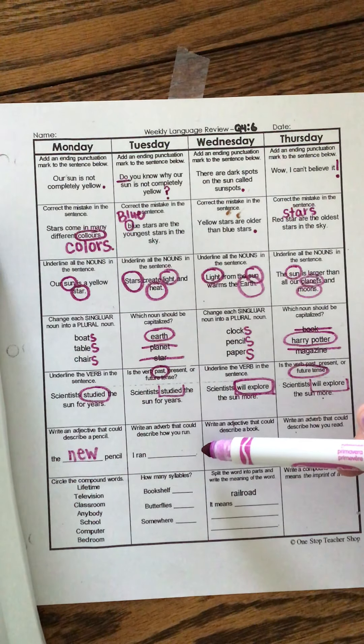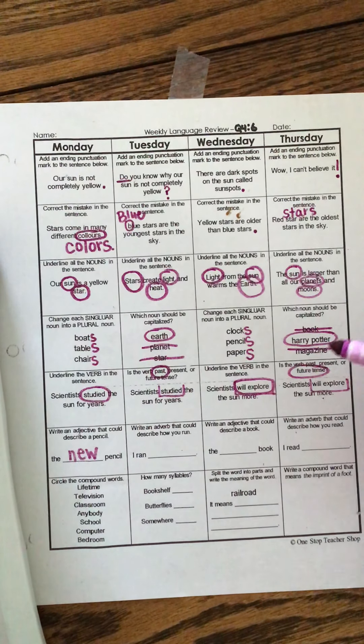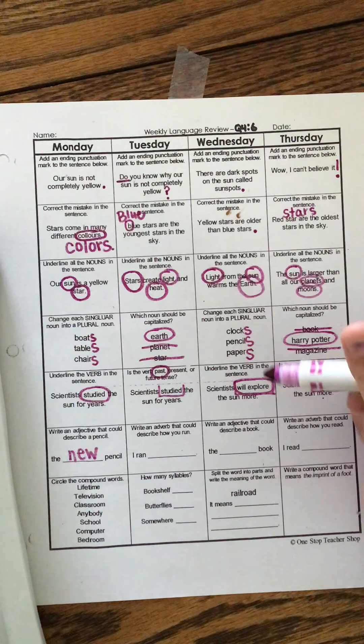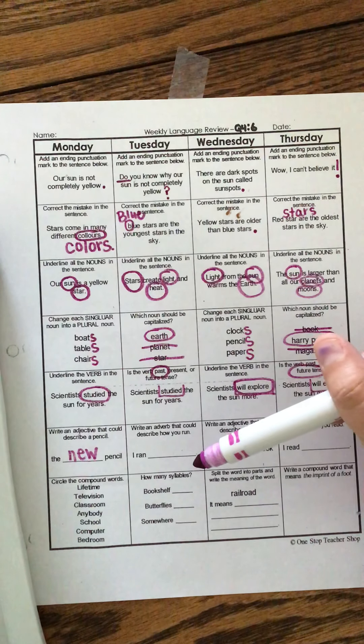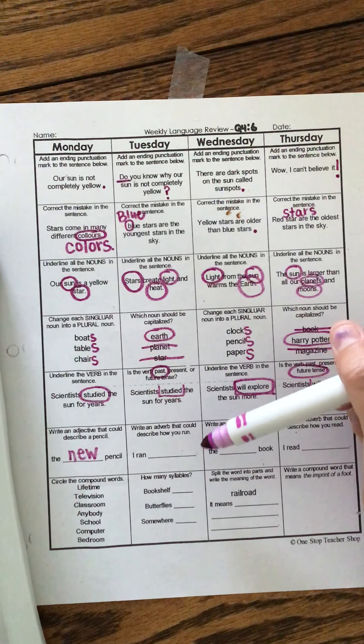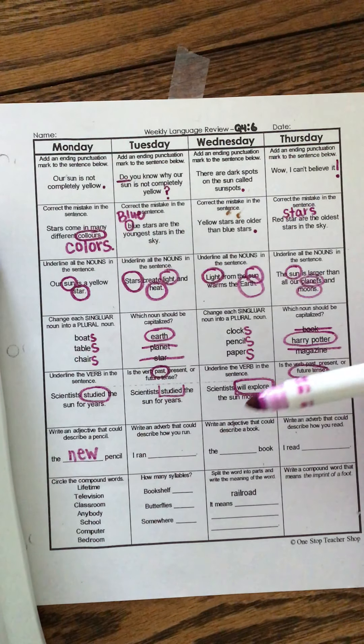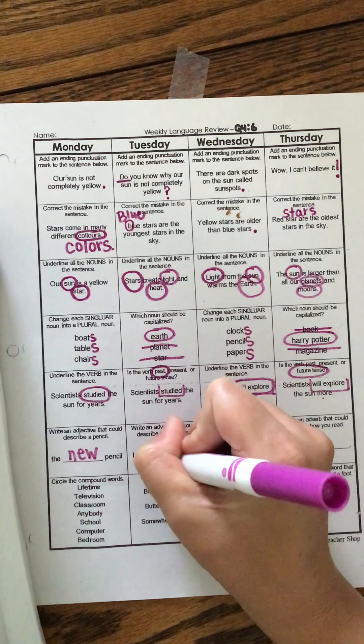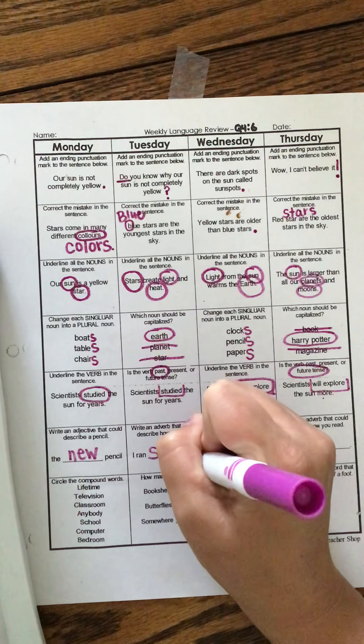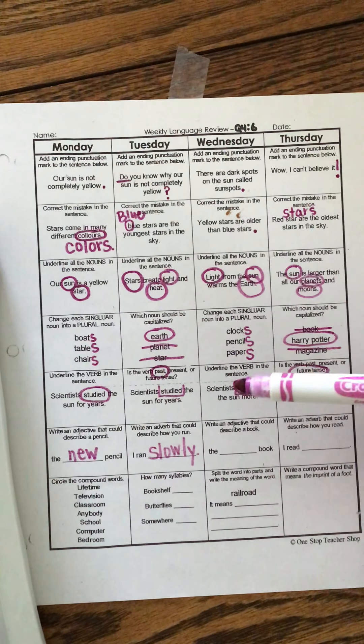Write an adverb that could describe how you run. Well, I'm going to use slowly. But any adverb that you use to describe the word ran is talking about how you're going to run. How did you run when you got there? Or how did you run to get there? Okay. So I ran slowly. Remember an adverb is a word that describes a verb.